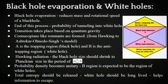According to Hawking radiation, the black hole size should shrink to Planckian size in the period of M₀³ divided by ħ. The probability density becomes unitary. Thus the V region is expected to be the region of white holes. The total entropy should be released, and the white hole remnant should be long-lived. This helps the information to escape at low frequency, obeying the bounds on maximal entropy of the horizon.